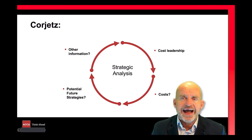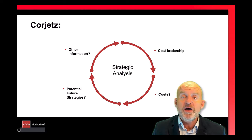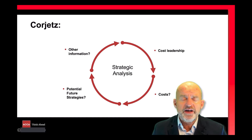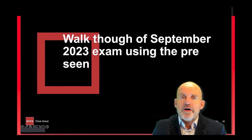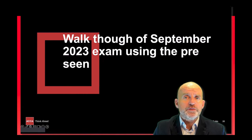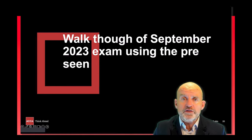That concludes my summary of the information in the pre-seen material. The true test though is how can this evaluation help us deliver better answers in the real exam? The first benefit is we don't have to deal with so much information on the day of the exam as the pre-seen has provided much of what we need to understand the organisational background and its business model. Let's now look at sample questions provided in the examiner's report for the September 2023 exam.